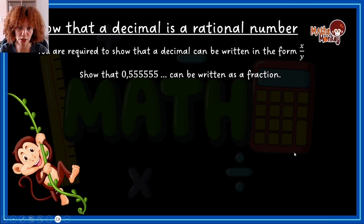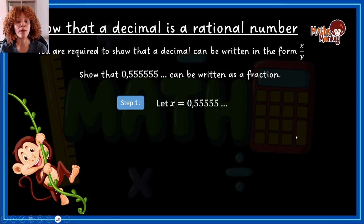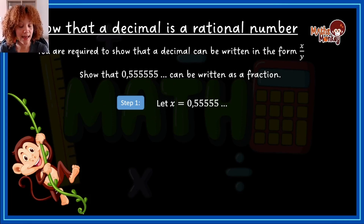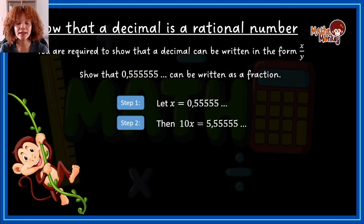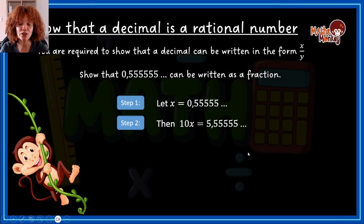The steps are as follows. First, let x equal the decimal given — so x equals 0.555... Then we multiply x by 10. It will always be 10, 100, or 1000. So 10x means I'm multiplying both sides by 10 — I haven't changed anything, just multiplied both sides. We do this so we can subtract step one from step two.